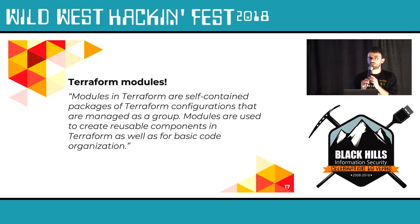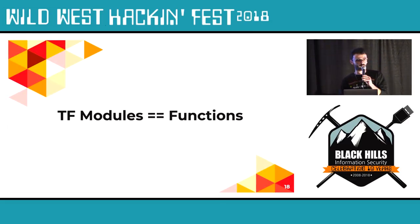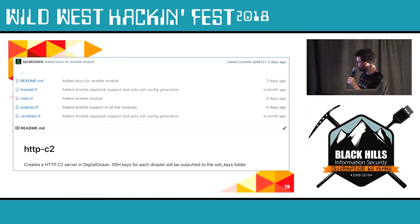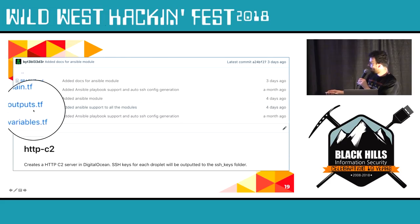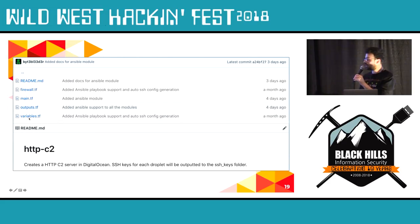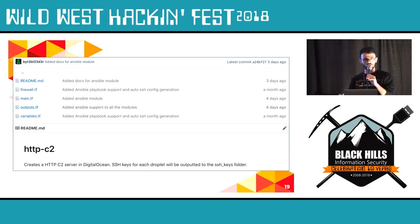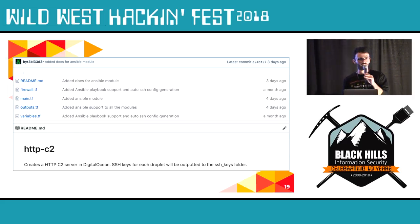It turns out there are things called Terraform modules. Terraform describes them as self-contained packages, but just think of Terraform modules as functions — like any programming language you know. To create a Terraform module, you just create a subdirectory in your root Terraform folder. A module consists mainly of three files: main.tf, which holds all your main logic; outputs.tf, which are the module outputs — your function return value; and variables.tf, which are the module inputs — think of them as arguments to your function.